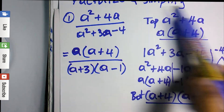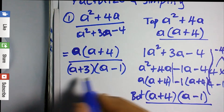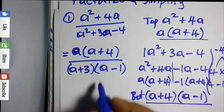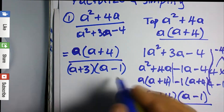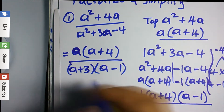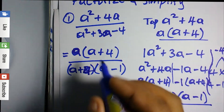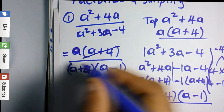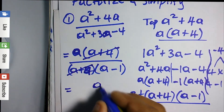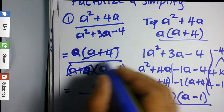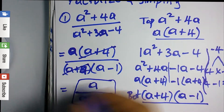Now we simplify. Whenever the top and bottom of a fraction have components separated by a multiplication sign, we can cancel. So a plus four on top cancels with a plus four on the bottom, leaving us with a over a minus one. That is our result.